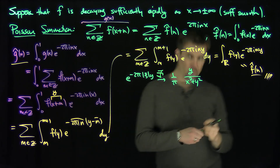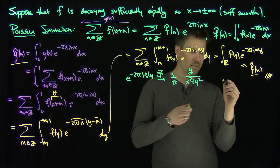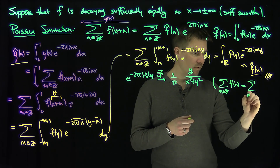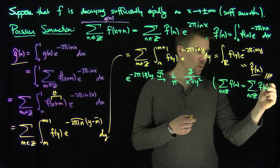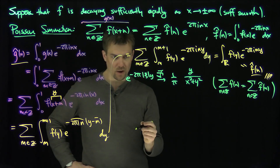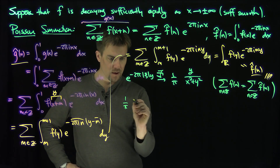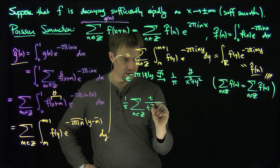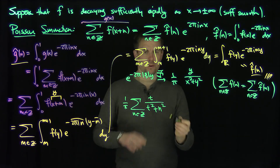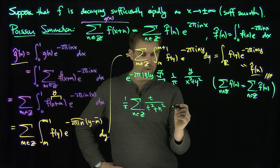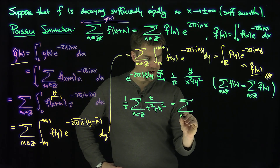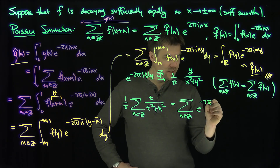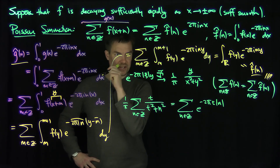One famous version of Poisson summation says the sum over n in Z of f of n equals the sum over n in Z of f-hat of n. Applying Poisson summation to the Poisson kernel, we conclude that 1 over pi times the sum over n in Z of t over (t squared plus n squared) equals the sum over n in Z of e to the minus 2 pi t times |n|. That's a quintessential example of Poisson summation.